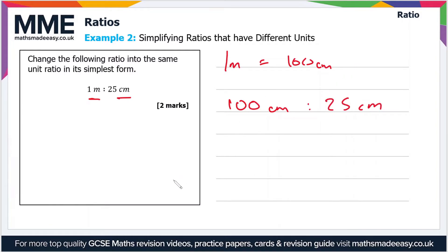Now to simplify this ratio all we have to do is divide both sides by a common factor, and the highest common factor is 25. So if we divide both sides by 25 we're left with 4 centimeters to 1 centimeter. Now there are no common factors of 4 and 1 other than 1, so this ratio is now in its whole number simplest form.